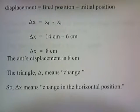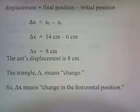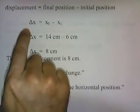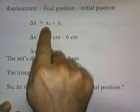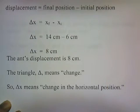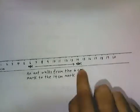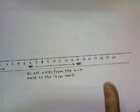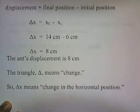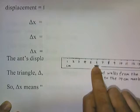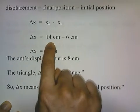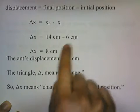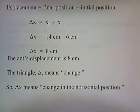Displacement is the final position minus the initial position. So delta x, that's the displacement, equals the final position minus the initial position. In our picture, the ant ends up at 14cm — that's the final position — and the initial position is 6cm. So xf is 14, xi is 6, and 14 minus 6 is 8cm. The ant's displacement is 8cm.